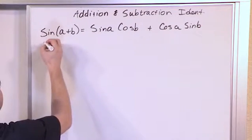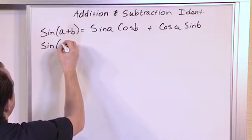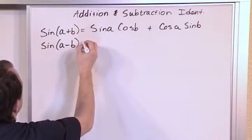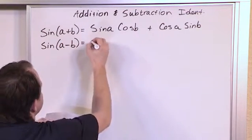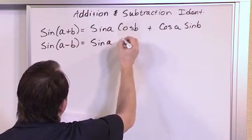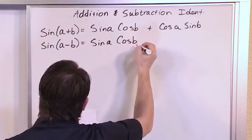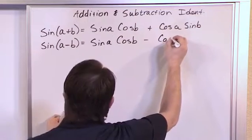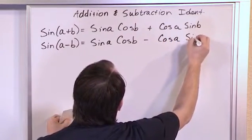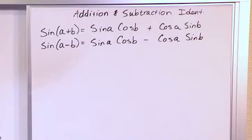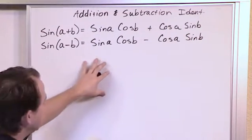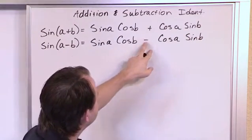Now very similar to that, sine of A minus B is very similar. Sine of A times cosine of B, that part's the same, minus cosine of A times the sine of B. Now I'll let that sink in. The only difference between these two identities, the only difference is the minus sign here.